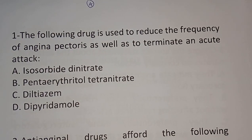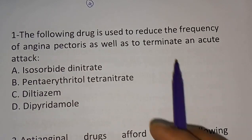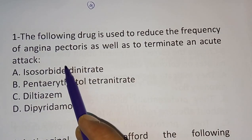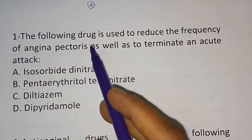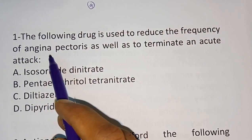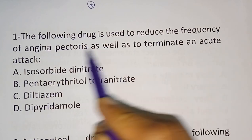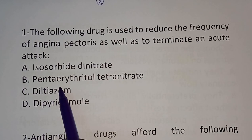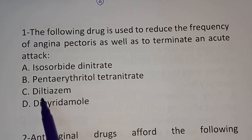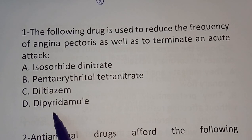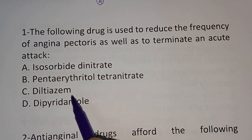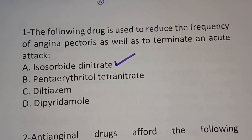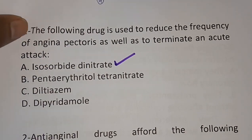First question: the following drug is used to reduce the frequency of angina pectoris as well as to terminate an acute attack. Options are: A) isosorbide dinitrate, B) pentaerythritol nitrate, C) diltiazem, D) dipyridamol. The correct answer is isosorbide dinitrate.